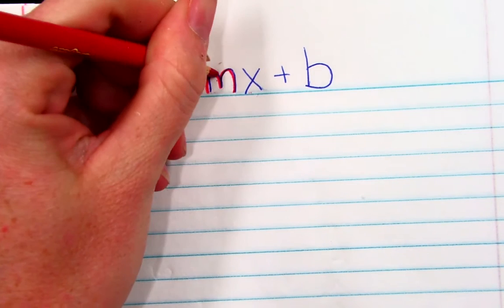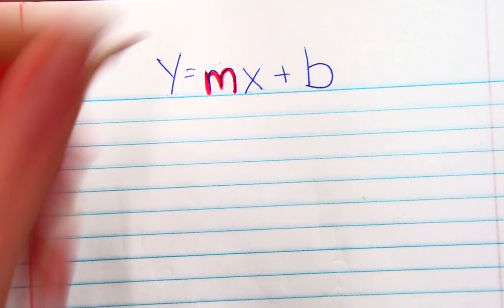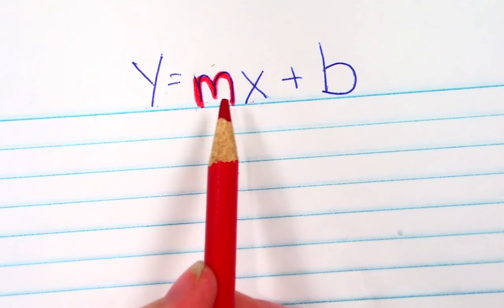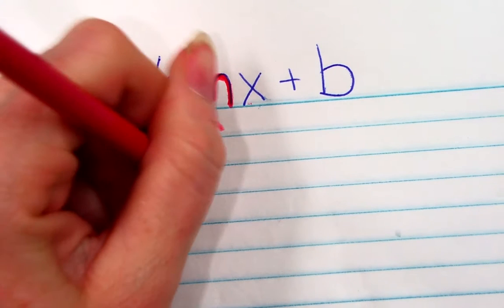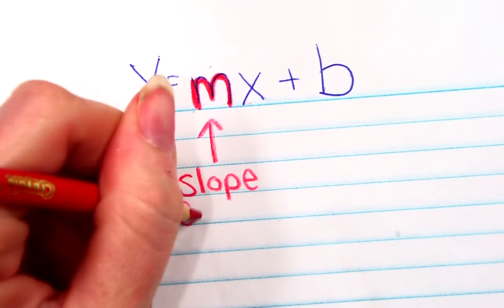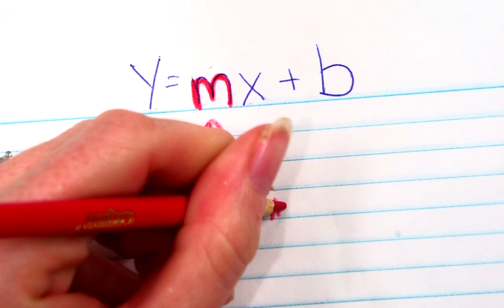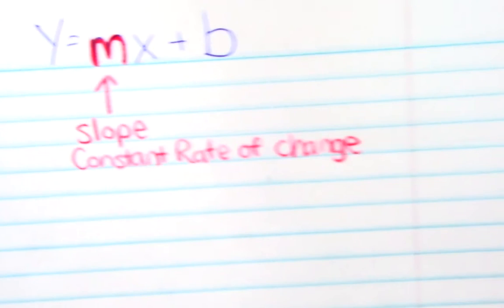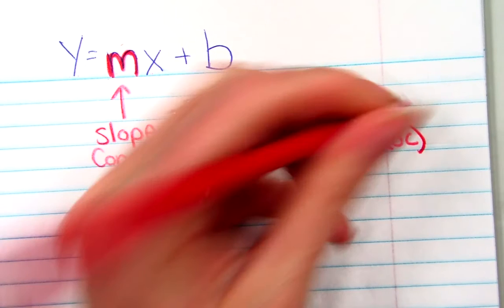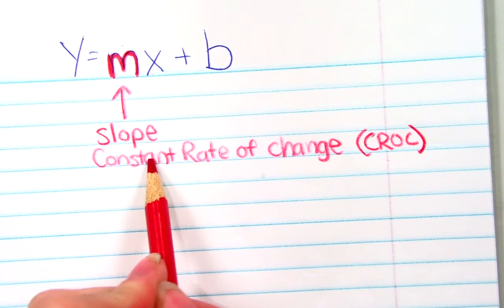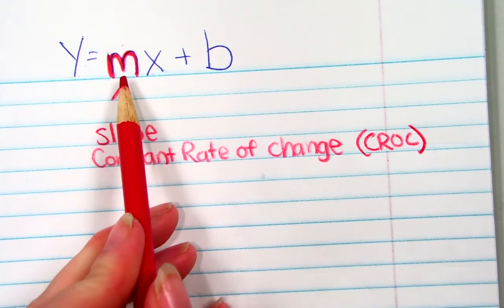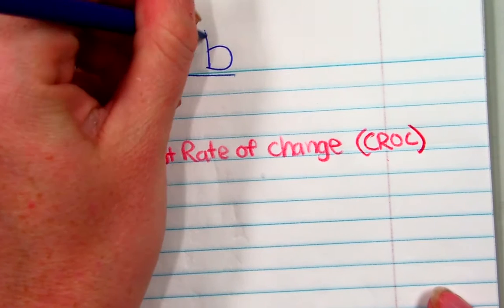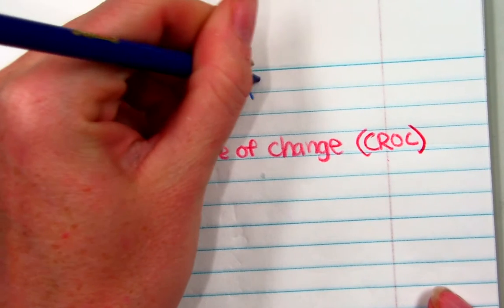This m will have a number in its place. It might be a fraction, a whole number, or a decimal. That m — we call it a coefficient, because it's right before the x — represents our slope, or our constant rate of change. For this video, I'll abbreviate that as 'croc.' That's not an official math term; I just don't want to write it over and over. The constant rate of change, or slope, will be the coefficient right before our x. This plus b is going to be our y-intercept.